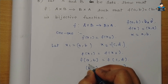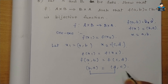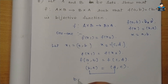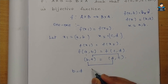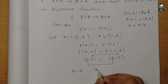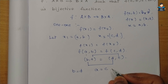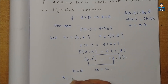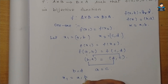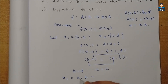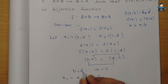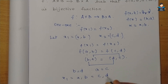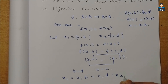Now comparing components: from f(a, b) = f(c, d), we get (b, a) = (d, c). Therefore b = d and a = c, which means a = c and b = d.